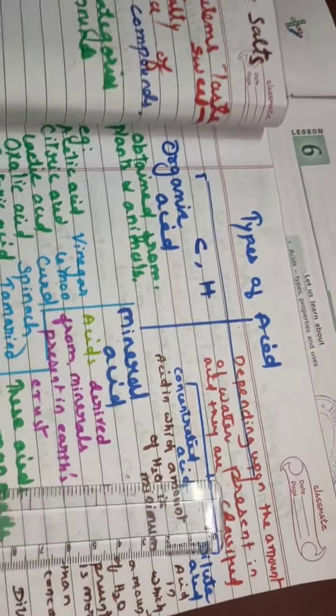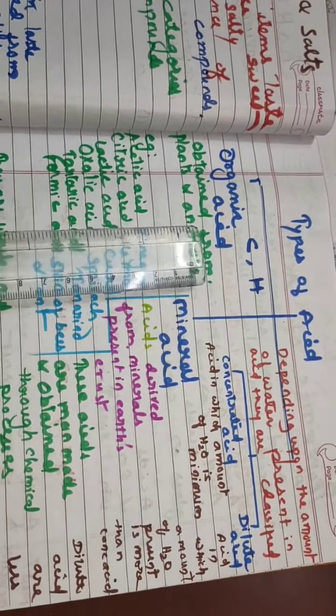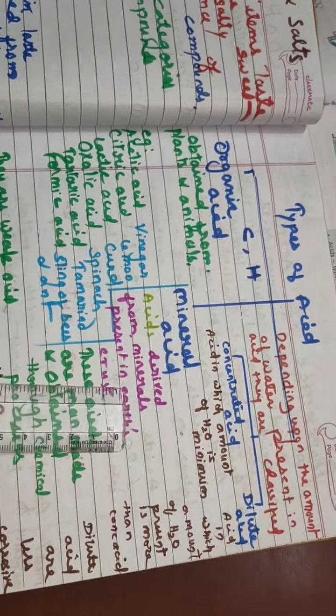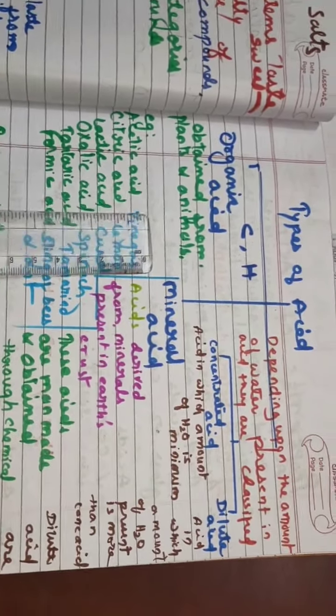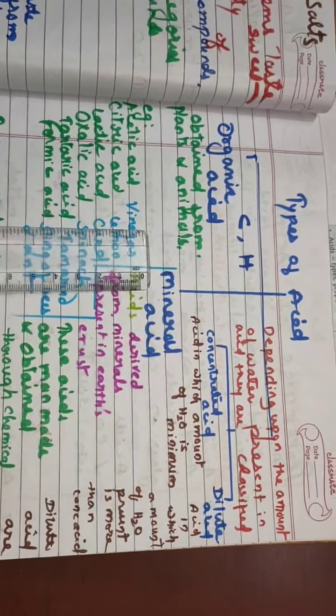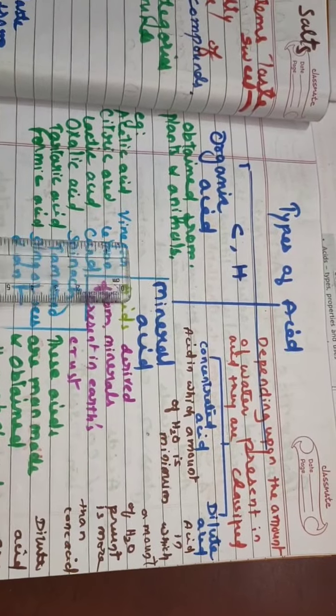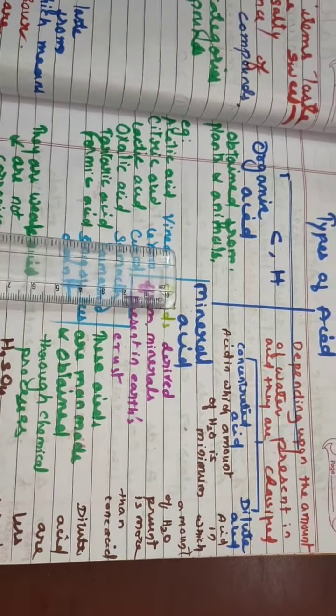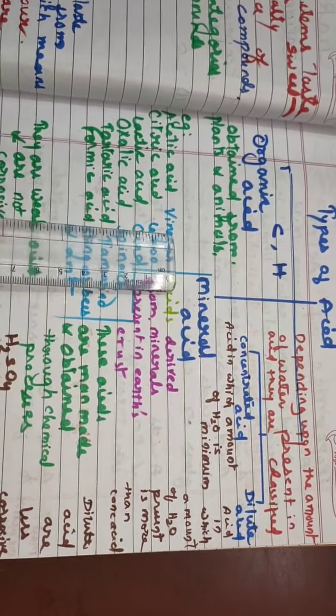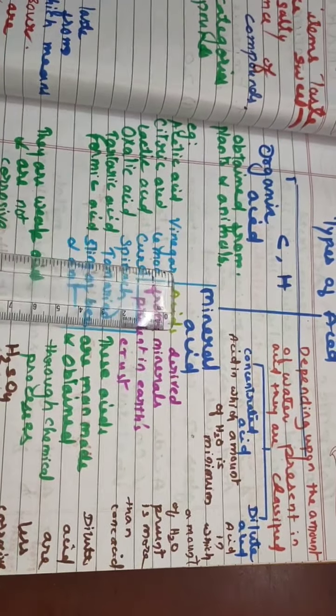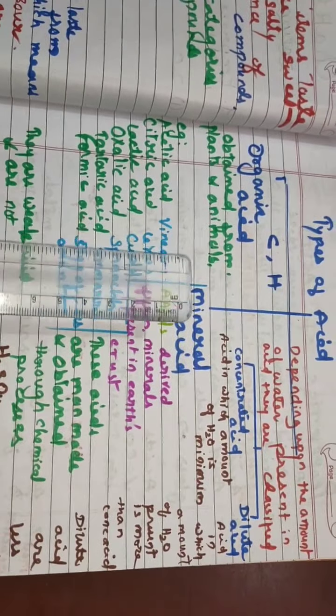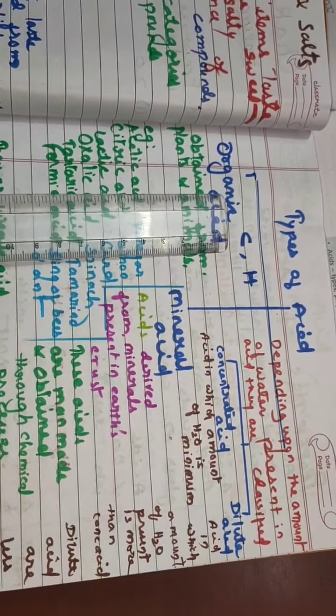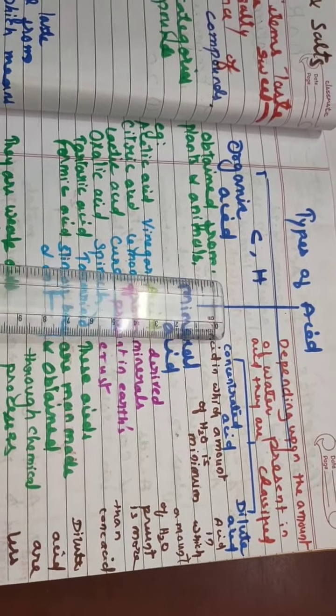Let us see types of acid. Acids are broadly classified into two categories: organic acid and mineral acid. Organic acids are those acids that we get from either plants or animals. The word organic means substances obtained from plants or animals that are naturally occurring. In them, two elements are always found: carbon and hydrogen.